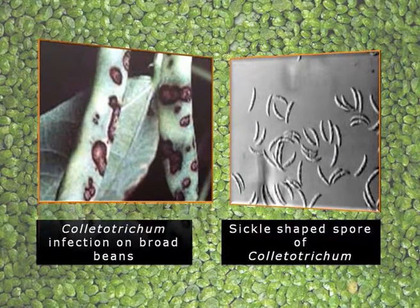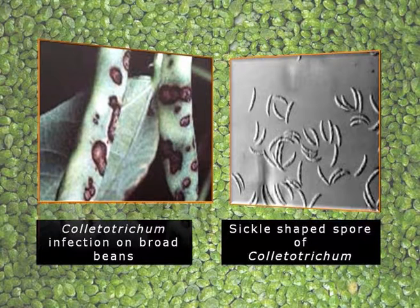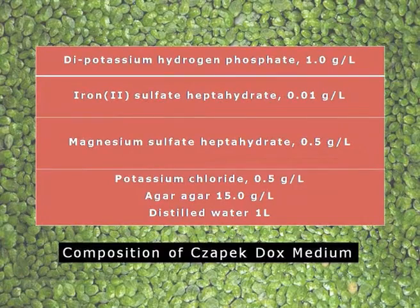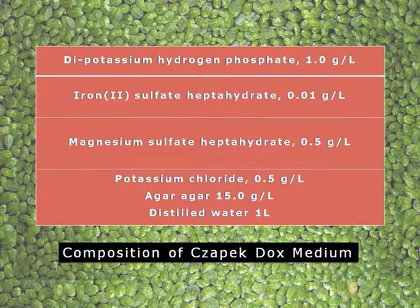Colletotrichum can cause diseases in broad beans and diseases of sugarcane, and this type of fungi is normally represented by typical sickle-shaped spores. These particular fungi which produce toxin can be cultured in the laboratory. The best possible medium is the ZAPEK-DOX medium, which contains di-potassium hydrogen phosphate, iron sulfate, magnesium sulfate, potassium chloride, agar-agar, and distilled water. This is the choicest medium for any phytopathogenic fungi that will produce toxin.